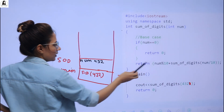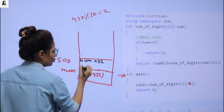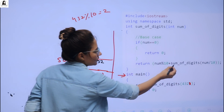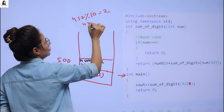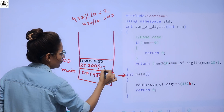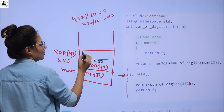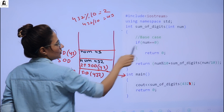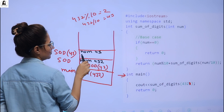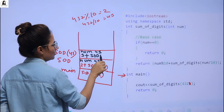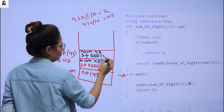Here num is 432. Is the base case condition true? No. So return num % 10: 432 % 10 gives 2. So it returns 2 plus sumOfDigits(432 / 10), which gives 43. So 43 is passed as the next call. The activation record for SOD(43) is created. Here num is 43. Is the base case true? No. num % 10 gives 3, plus SOD(43 / 10) which gives 4. So here we have 4.